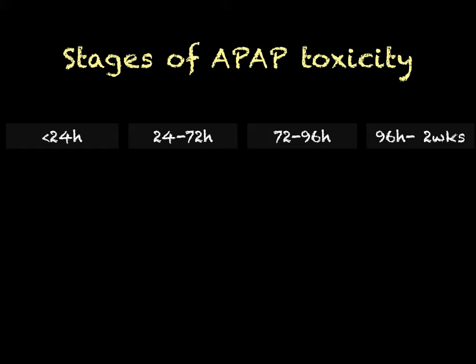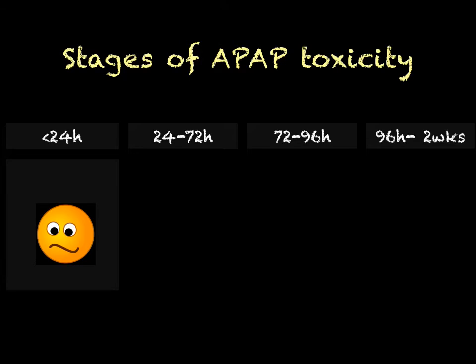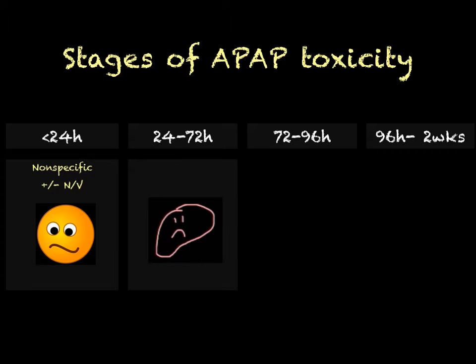Within the first 24 hours, one may only experience a little bit of nausea, maybe some vomiting, but mostly fairly nonspecific symptoms. Between 24 to 72 hours, one may start experiencing a little bit of right upper quadrant pain, and when you check their labs, their liver function tests may start to become elevated.